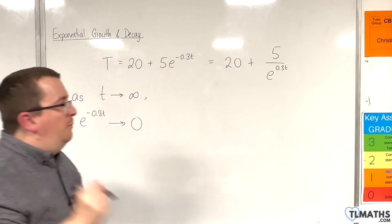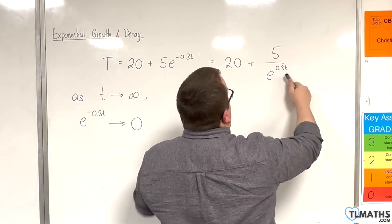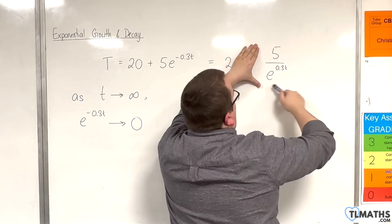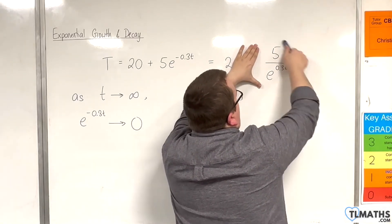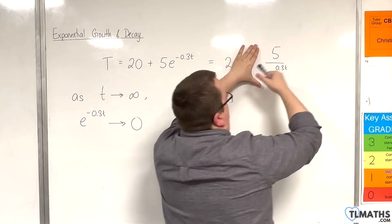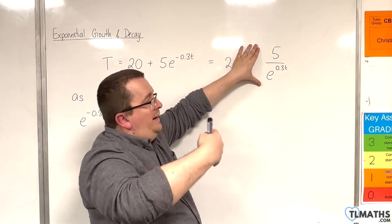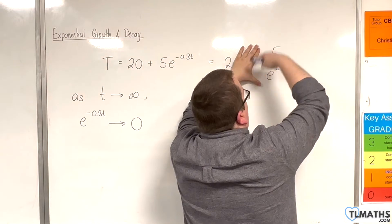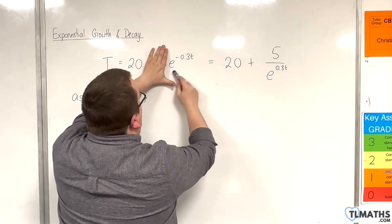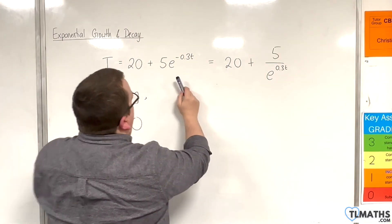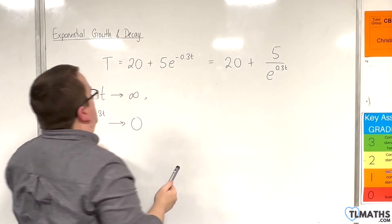What's happening is that e to the 0.3t is getting larger and larger, so the denominator of this fraction is getting larger and larger, which means the overall value must be getting smaller and smaller — dividing by 10, 100, a thousand, a million, a billion. The denominator is getting larger, so the fraction is getting smaller. This term is getting smaller and smaller, and it doesn't matter that I'm multiplying by 5 — the whole thing will be getting smaller and smaller.